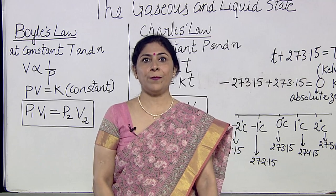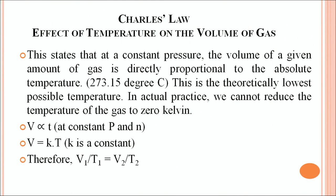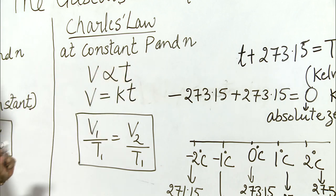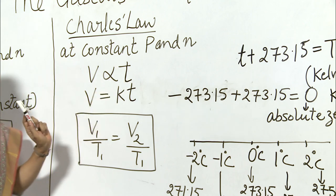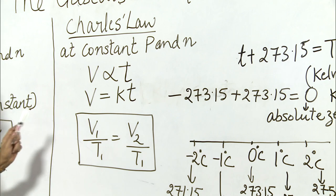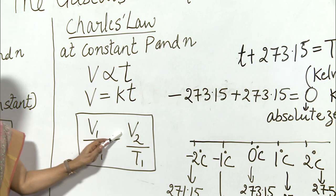Now we move on to Charles' law — the effect of temperature on the volume of a gas. It states that at constant pressure, the volume of a given amount of gas is directly proportional to its absolute temperature. Charles kept pressure and number of moles constant and found that V is directly proportional to T. Removing the proportionality constant gives V = KT, and therefore V₁/T₁ = V₂/T₂.